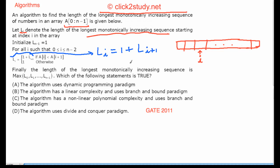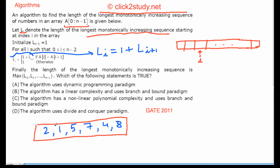Let's look at a concrete example. Suppose you have some sequence: 2, 1, 5, 7, 4, 8 — stored in an array. The indices are: 0, 1, 2, 3, 4, and 5. What do I mean by L[4]? The element at index 4 is 4.